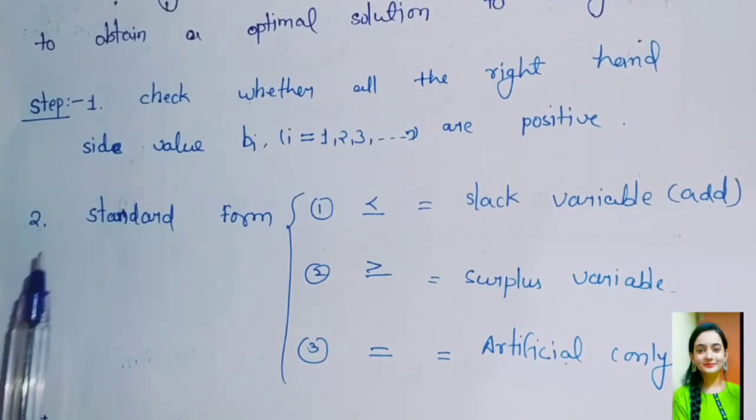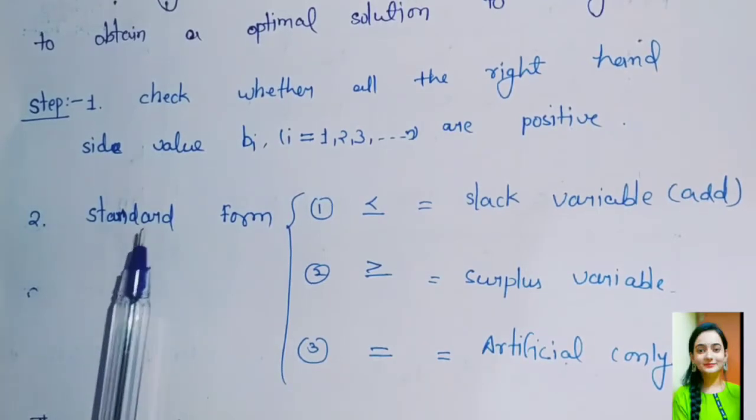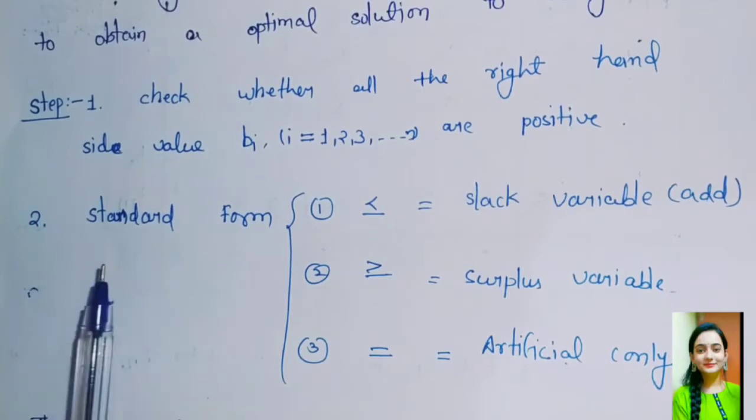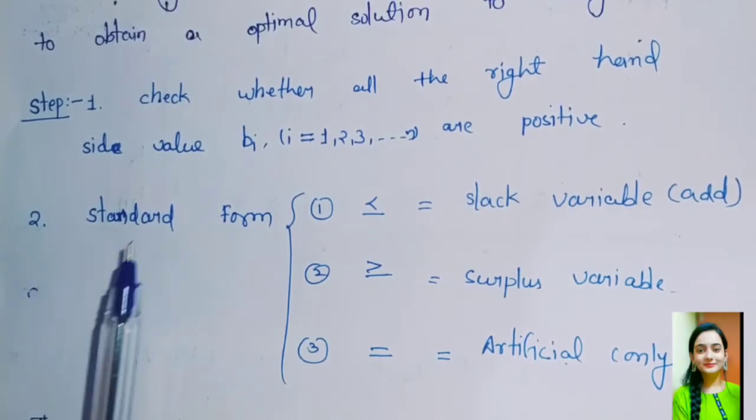Step 2: Express the problem in standardization form, that is, standardize the problem. This step converts the inequality constraints into equations by introducing slack or surplus variables.